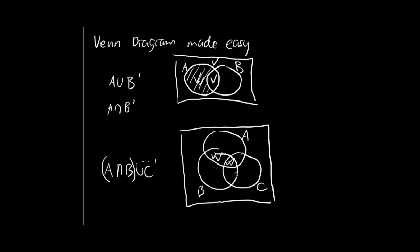So now we want to do this part: union C prime. I'm going to check everything that's in C prime. And now since this is the union, we're going to include everything that has been checked once, twice, or three times. So the result is going to be the outside and then this area.